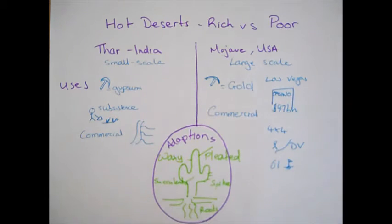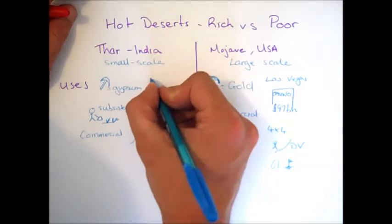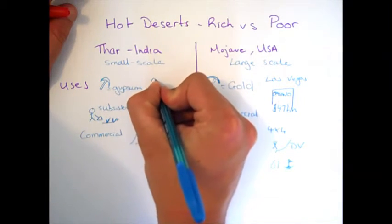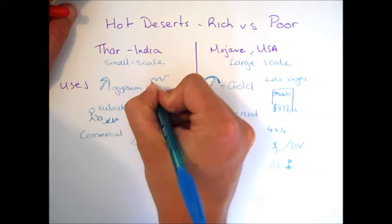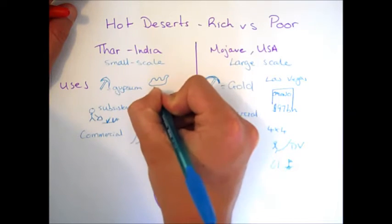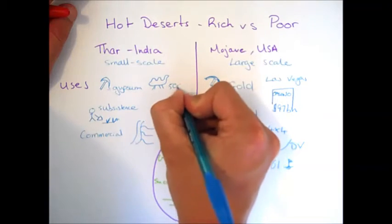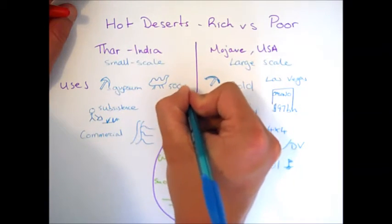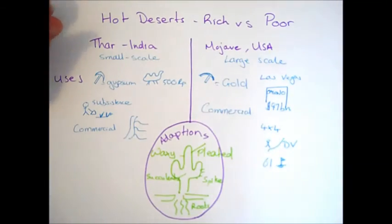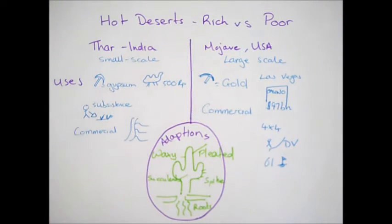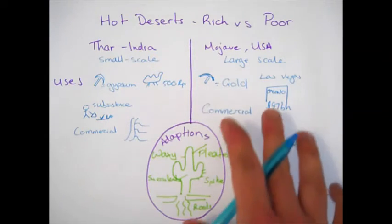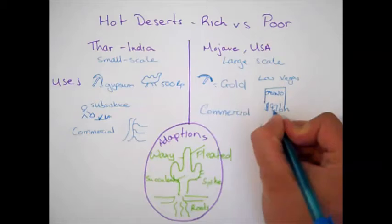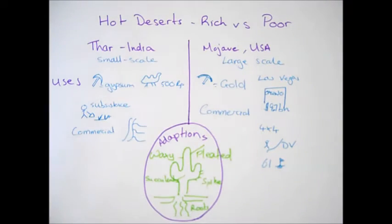On the other hand, if we go to the Thar Desert, it's much smaller scale tourism. You're looking at things such as camel rides. And I apologize, I cannot draw a camel. There we go. And you're looking there at a price per camel ride of 500 rupees. So, obviously, much, much smaller scale tourism. Not going to make anywhere near as much money from that as they do the $9.7 billion of revenue in Las Vegas just from the gambling.